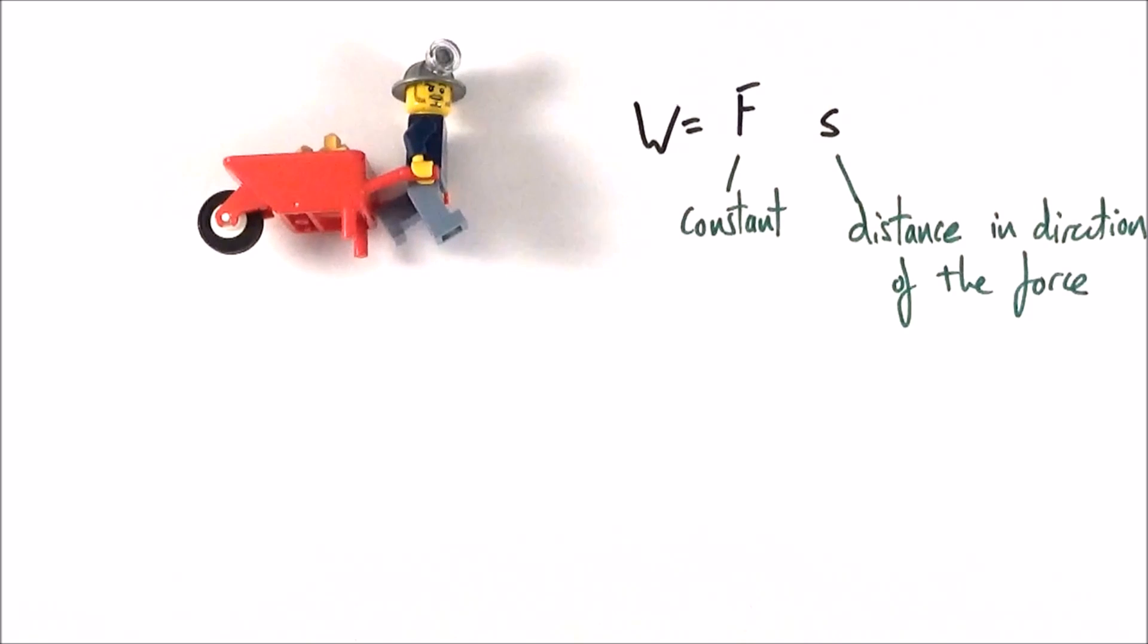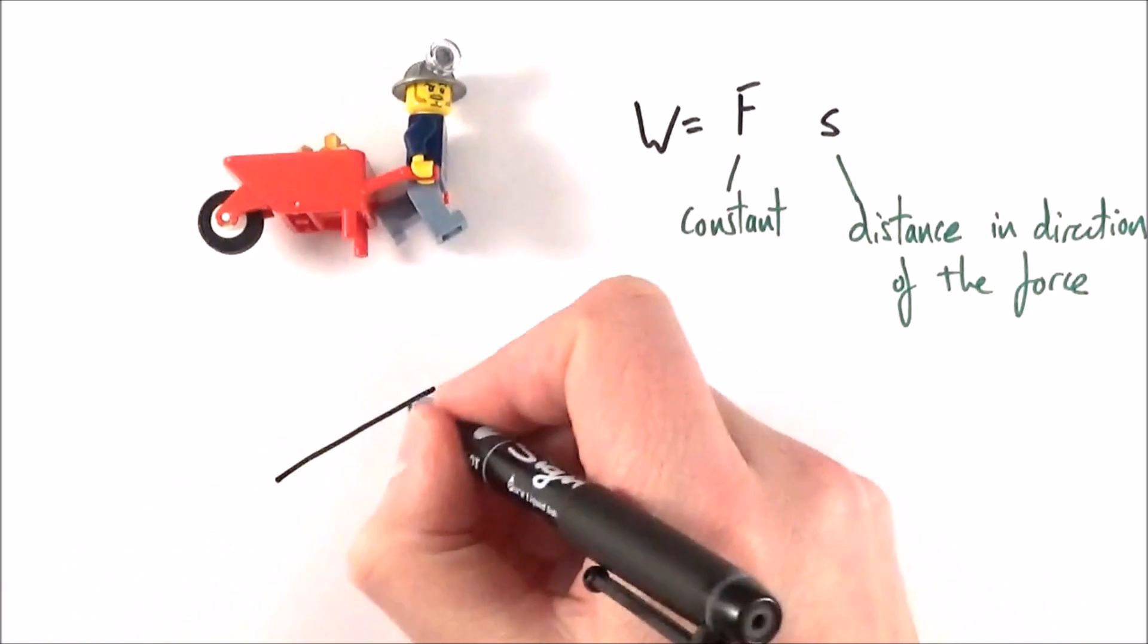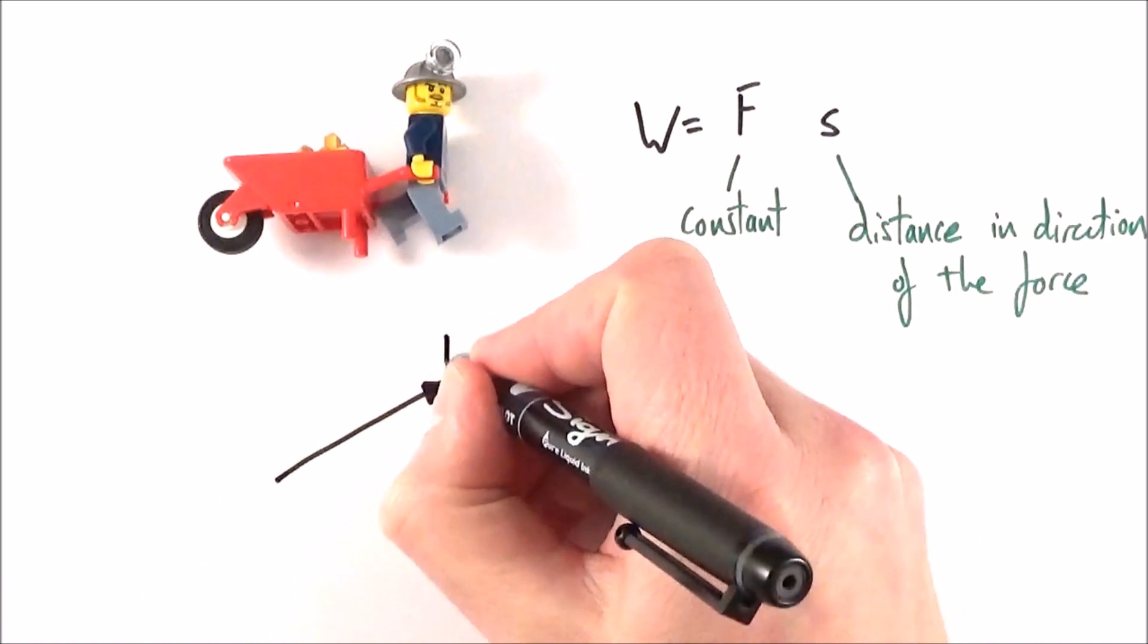And most of the time that's fairly straightforward, but sometimes we get a bit more complicated. So perhaps if we draw a diagram of what's going on with this wheelbarrow here, the man might be applying a force at a certain angle. So I'll call that force F.